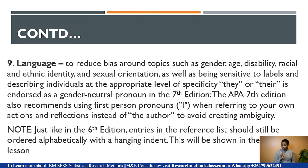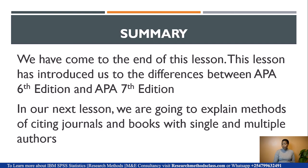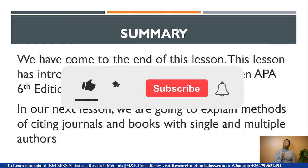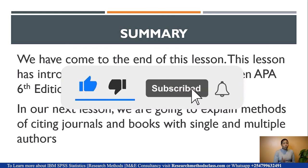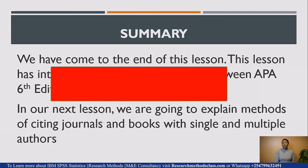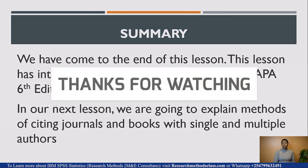It is important to note that, just as in the 6th edition, entries in the reference list should still be ordered alphabetically and should have a hanging indent — this will be shown in our next lesson. That brings us to the end of today's lesson covering the notable differences between the 6th and 7th editions. Our next lesson will look at how to cite journals, books with single and multiple authors, and online books. Please subscribe, like, and share this lesson, and feel free to ask questions in the comments.